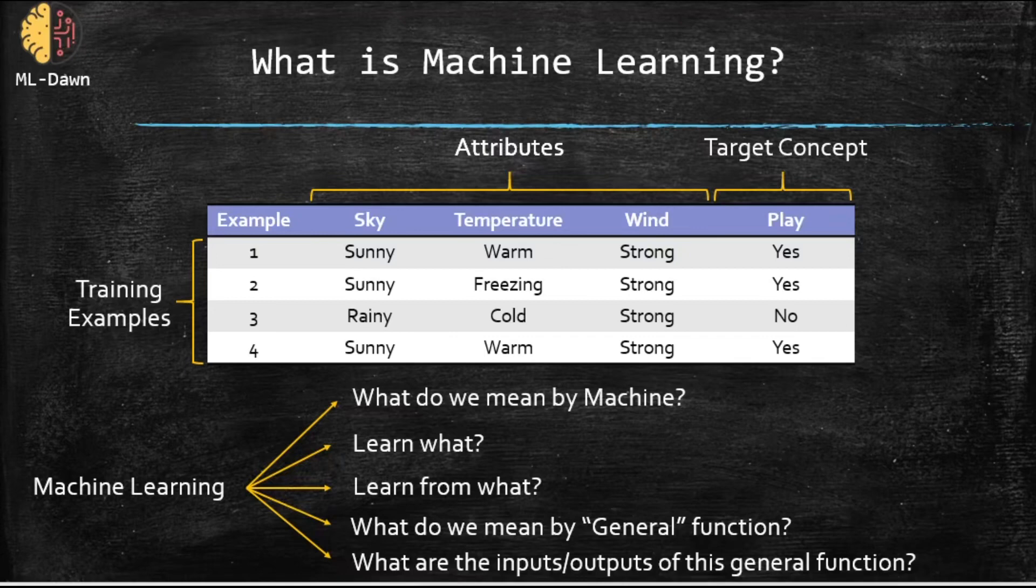So the machine will have to learn depending on the values of these attributes what is the habit of this Joe that we're talking about. If it sees loads of examples of these attributes and the corresponding target concept for each one of them, then hopefully it will be able to extract the pattern out of that table and figure out what is that underlying hidden habit of this Joe guy that makes him decide whether he's going to play or not.